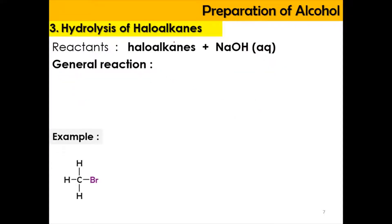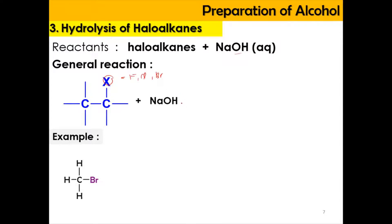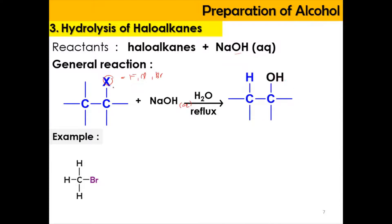We move on to the next method, which is the hydrolysis of haloalkane. When haloalkane is reacted with aqueous NaOH — sodium hydroxide — we can produce an alcohol. For the general reaction, if we have haloalkane where X can be fluorine, chlorine, or bromine, when reacted with aqueous sodium hydroxide, X is replaced with OH. This happens in the presence of water at reflux condition.